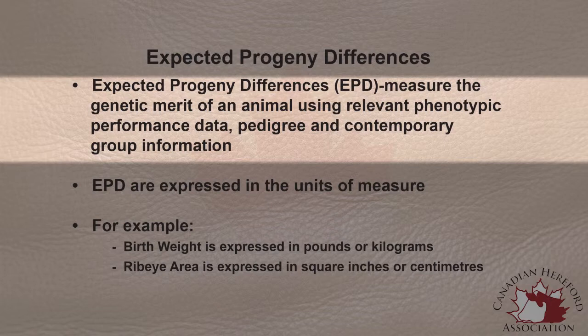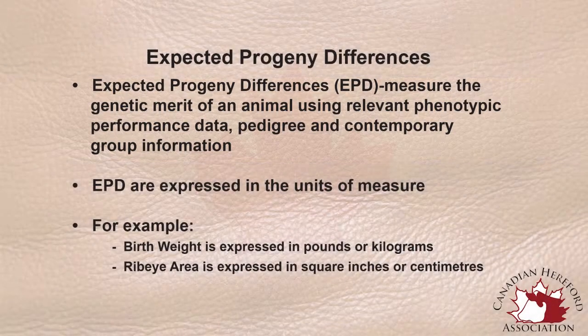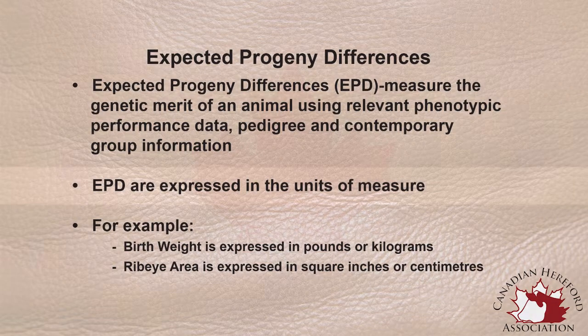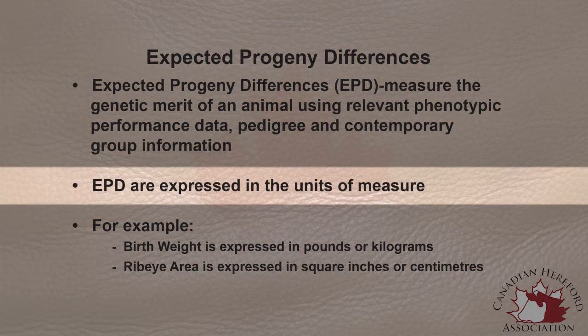EPDs are calculated from a variety of information, but typically that will include performance data, pedigree information, and also the contemporary group information that an animal finds itself in related to other animals. Typically, we express the EPD on the same scale or the same units of measure as what the trait itself is measured on.